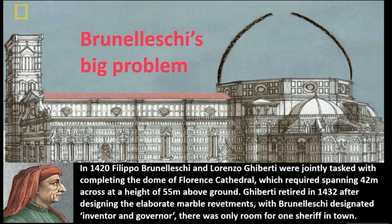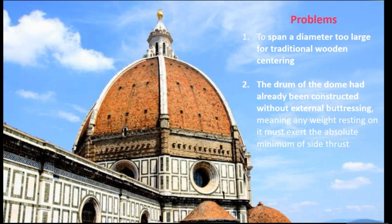After losing out to Ghiberti, Filippo Brunelleschi and his old rival were jointly tasked in 1420 with completing the Dome of Florence Cathedral, which required spanning 42 metres across at a height of 55 metres above ground. Ghiberti retired in 1432 after designing the elaborate marble revetments, but with Brunelleschi designated inventor and governor, there was only room for one sheriff in town. On the one hand, he had to span a diameter too large for traditional wooden centering used to construct Gothic cathedrals. At the same time, the drum of the dome had already been constructed without external buttressing, meaning that any weight resting on it must exert the absolute minimum of side thrust.